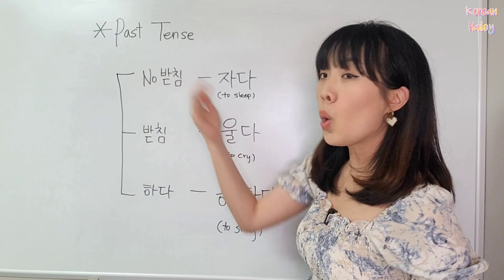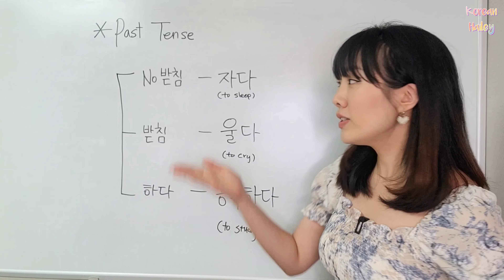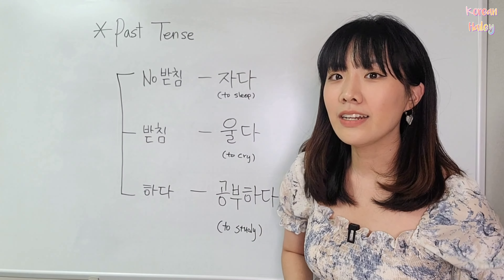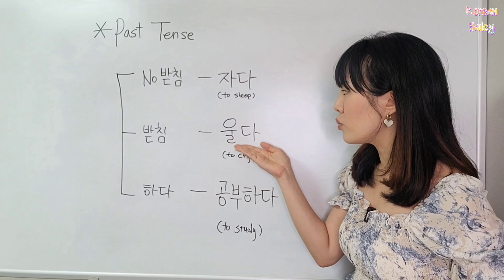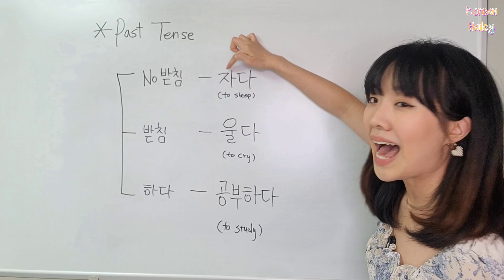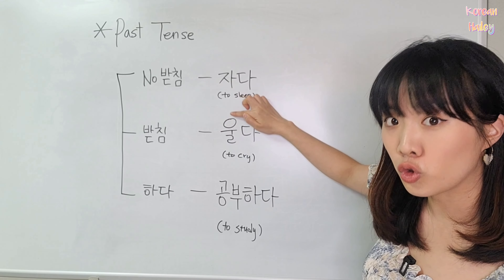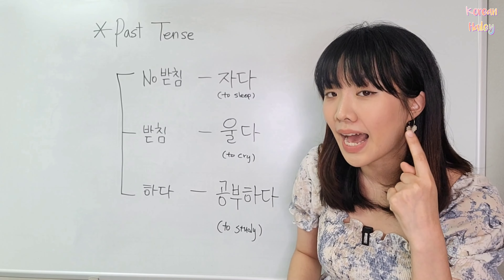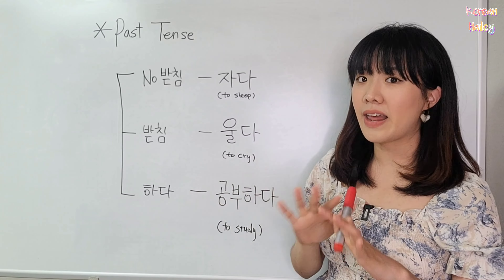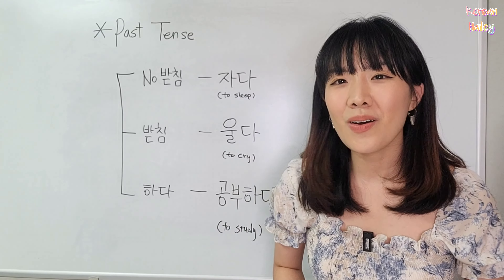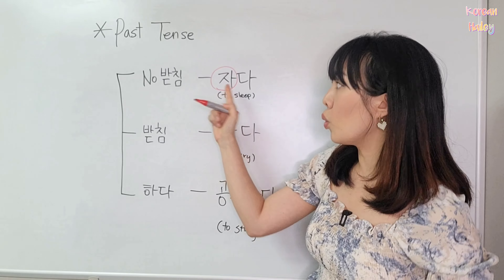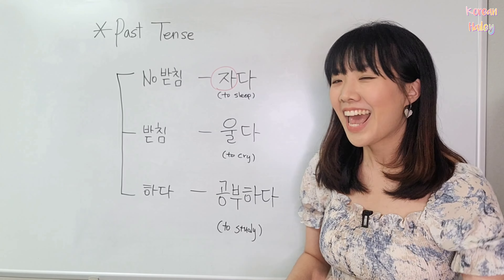The first verb type is 노받침. When you see the verbs here, it's 자다 — it means sleep. When you see verbs, they all end with 다. 다 doesn't have any meaning; the meaning part is only 자. So when I hear 자다, I know it's sleep because of 자. The 다 is the grammar part — it doesn't have any meaning. So 노받침 means when you look at the meaning part, there is no 받침.